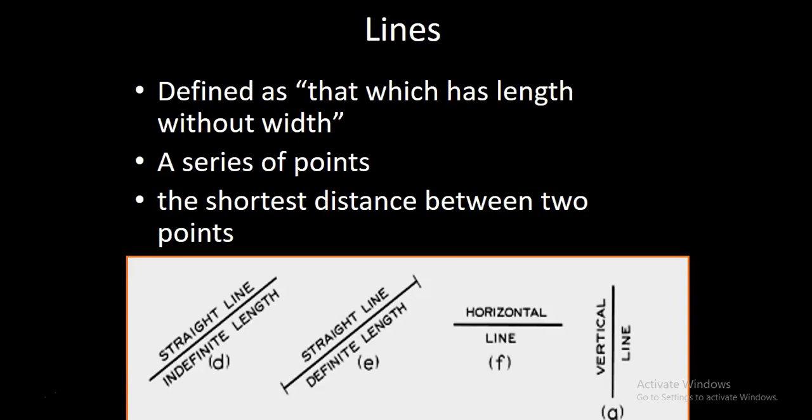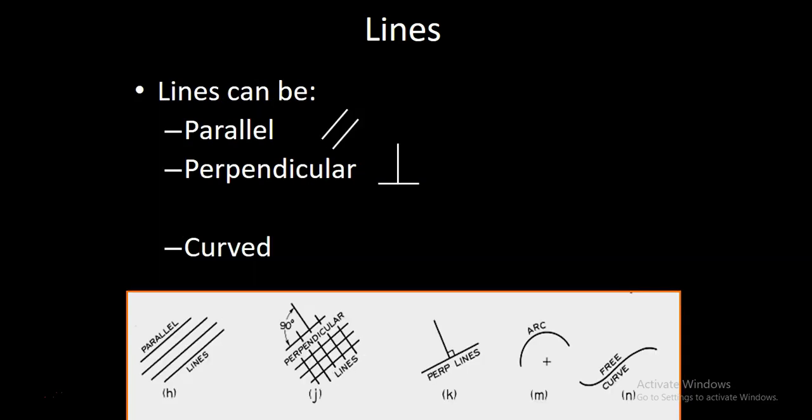Lines are really a series of points or something with length that has no width. We're drawing horizontal and vertical and inclined lines. Sometimes lines are parallel and there's a symbol that tells you if lines are parallel, and there's a symbol that tells you lines are at 90 degrees to each other or perpendicular. And then sometimes lines are curved. Sometimes that curve is a free curve like a spline, and other times it's a circular curve like that arc.